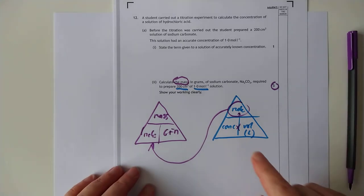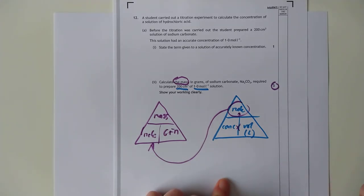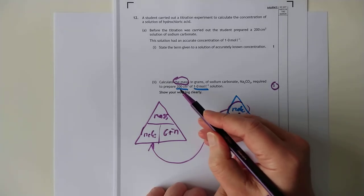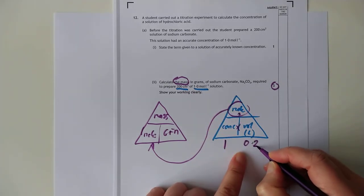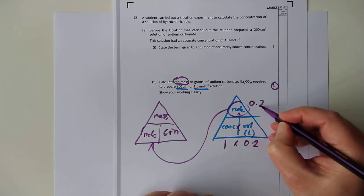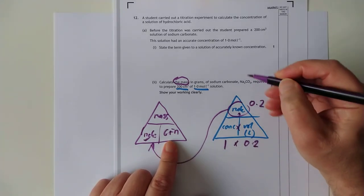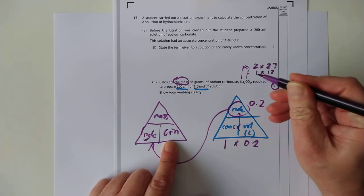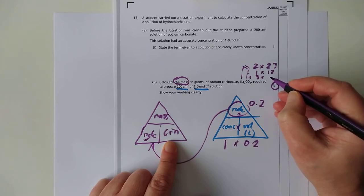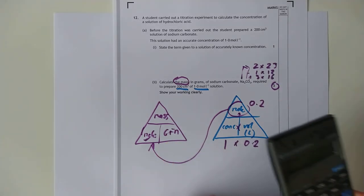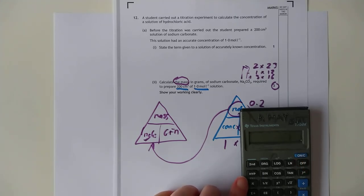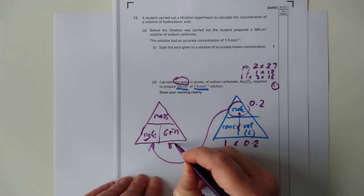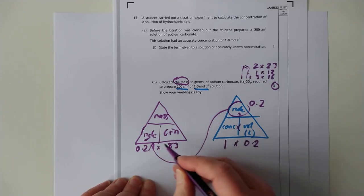Let's work out the moles first, using concentration times volume. Concentration is 1 moles per litre. The volume is not 200 though. The volume's got to be in litres, so that becomes 0.2. So 1 times 0.2 is 0.2 for the moles. GFM of sodium carbonate. I'm seeing 2 lots of sodium, so that's 2 times 23. 1 lot of carbon, so that's 1 times 12. And 3 lots of oxygen, that's 3 times 16. That's 48 plus 12 plus 23. Gives us 83. So the GFM is 83. The moles are 0.2. We multiply these two together. So 83 times 0.2 gives us 16.6.